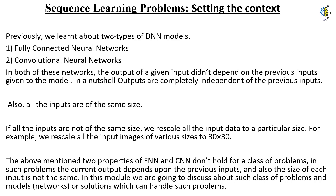Sequence Learning: Setting the Context. Previously, we learned about two types of DNN models: Fully Connected Neural Networks and Convolutional Neural Networks. In both of these networks, the output of a given input didn't depend on the previous inputs given to the model. In a nutshell, outputs are completely independent of the previous inputs. Also, all the inputs are of similar size.